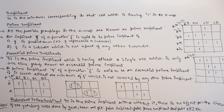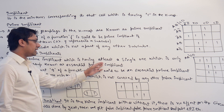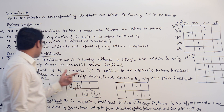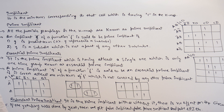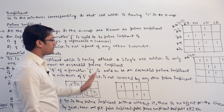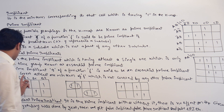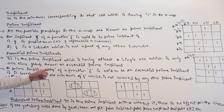An essential prime implicant is a prime implicant which is having at least a single one which is only covered by that one grouping. In other words, prime implicant G of function F is said to be an essential prime implicant if it covers at least one min-term of F which is not covered by any other prime implicant.